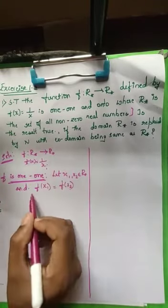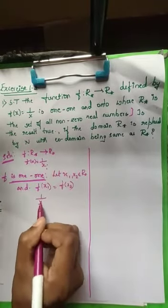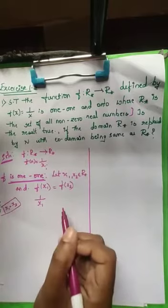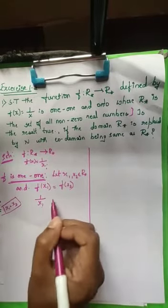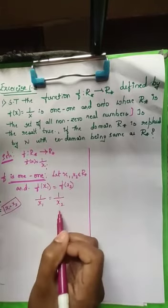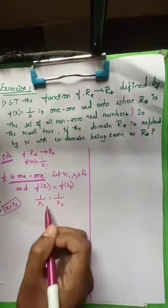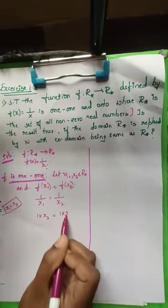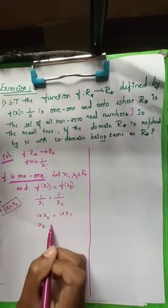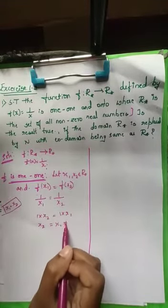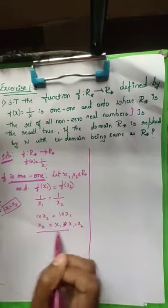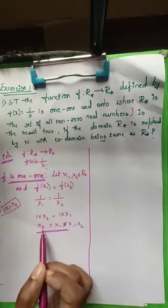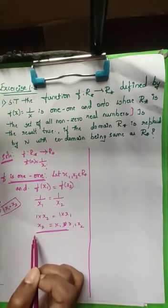Since f(x) = 1/x, we have f(x1) = 1/x1 and f(x2) = 1/x2. Our aim is to show x1 = x2. From 1/x1 = 1/x2, we cross-multiply: x2 = x1, which is the same as x1 = x2. So by assuming the images are equal, we have proved the elements are also equal. Therefore f is one-one.